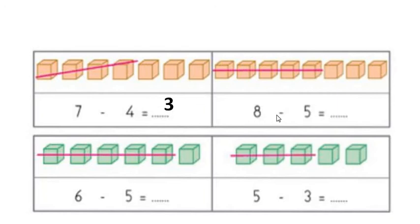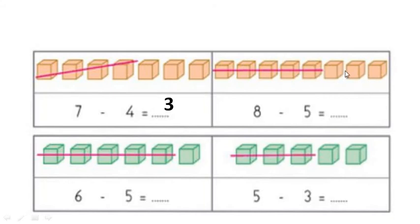The sum is 8 minus 5. There are 8 objects. Out of that, I have to cut or reduce 5 objects: 1, 2, 3, 4, 5. I count the remaining objects: 1, 2, and 3. So 8 minus 5 equals 3.